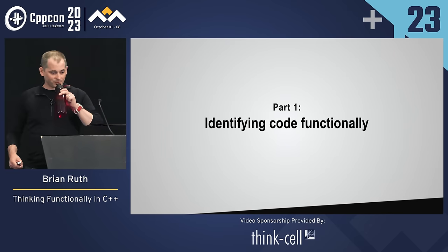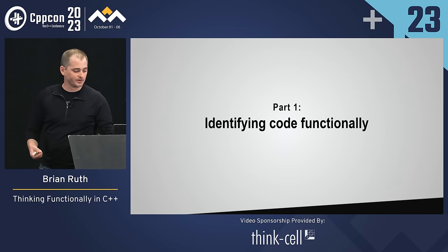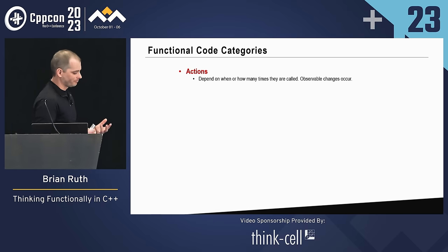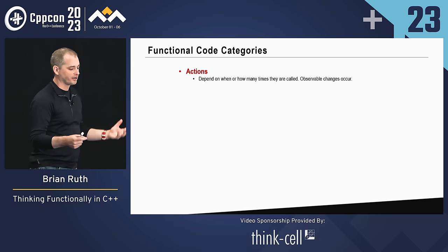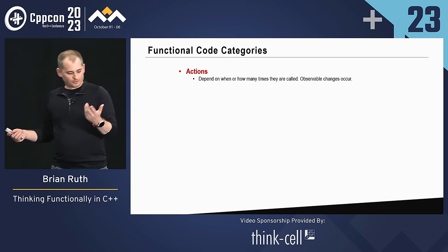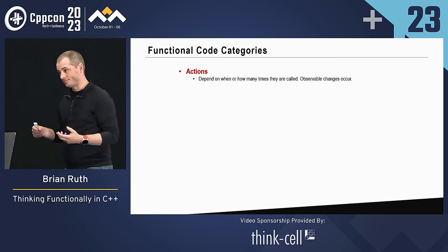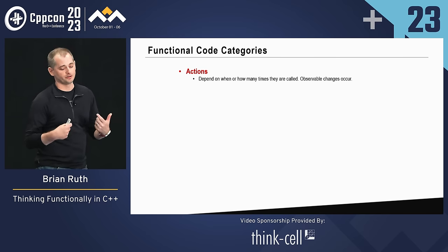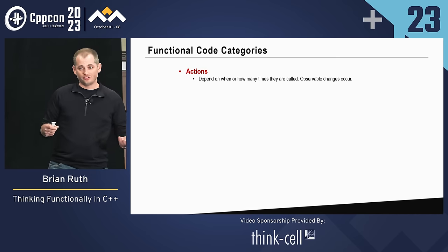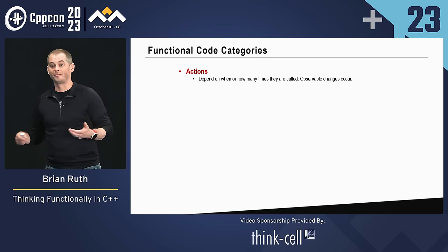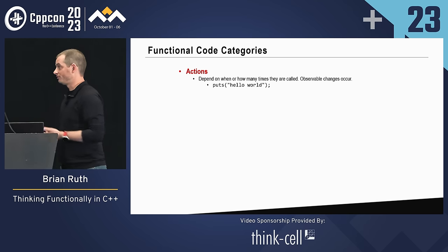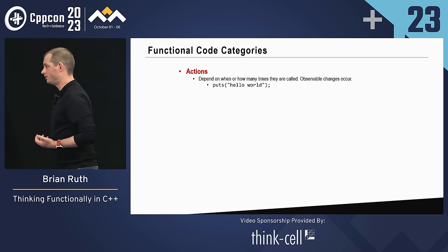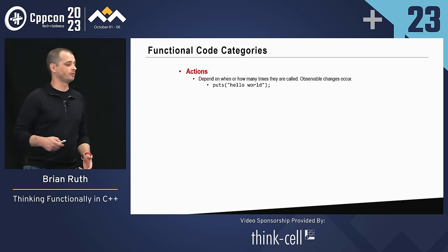So now we get to part one: identifying code functionally. When you think about a program in a functional manner, you want to divide code up into some basic categories. The first category is going to be actions — action code is code that depends on when or how many times it is called. Observable changes will occur when you perform an action. An example is puts 'hello world' — you call it multiple times, it gets printed to the screen multiple times, so it matters how often you call this code.